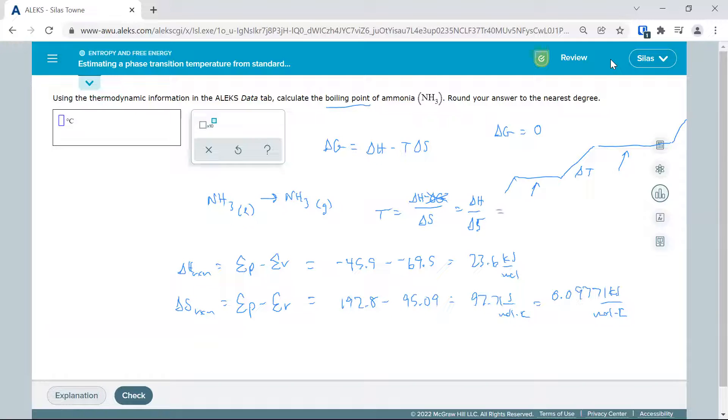So I'm going to divide 23.6 kilojoules per mole over 0.09771 kilojoules per mole Kelvin. Everything cancels but Kelvin, which comes up to the top, and I get 241.53 Kelvin. Now it asks for Celsius, so I'm going to minus 273.15, and I get negative 31.62 degrees Celsius.